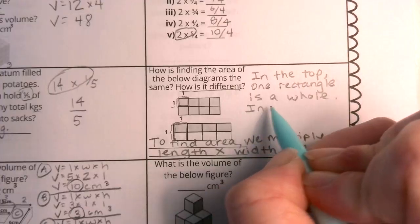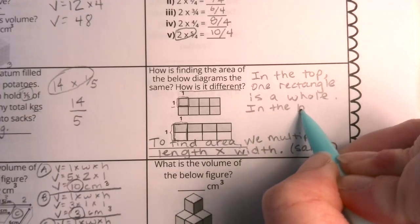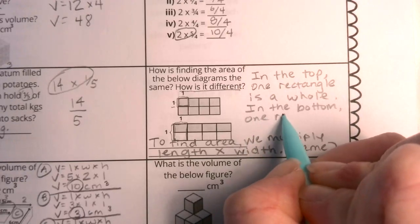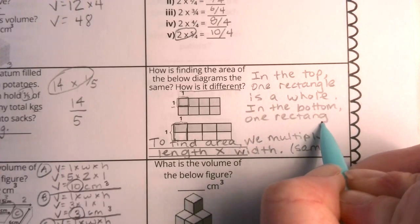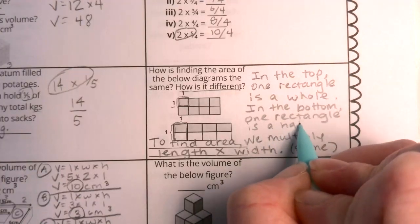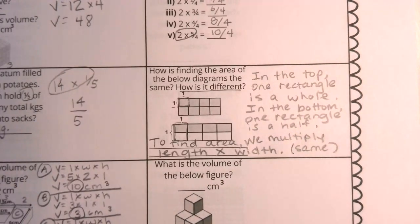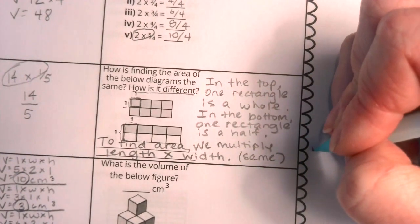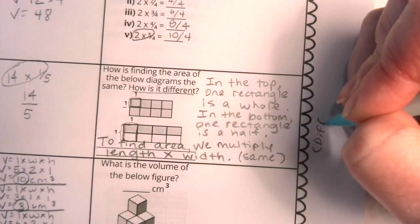In the bottom, one rectangle is a half. So boys and girls, this statement right here, I'm going to kind of write it to the side and in parentheses. This is how they're different.